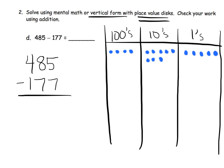Now it says we need to subtract, so I'll get my different color pen. It says start with 5 ones, take away 7 ones. Well, if you have 5 and need to take away 7, we can't do that. So we are going to take one ten and unbundle it, giving us 10 more dots in the ones column — 10 making 15 total. Now we have 15 and it says take away 7, so we cross off 7. We now have 8 in the ones column.